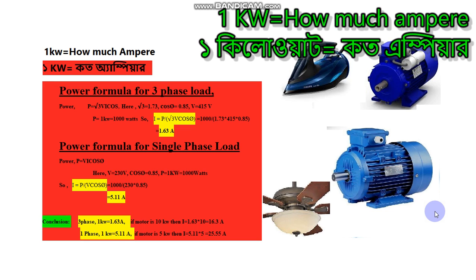The first is the power formula for a three-phase load, and the second is the power formula for a single-phase load. The power formula for a three-phase load is: P = √3 × V × I × cosθ. Here, √3 is equal to 1.73, cosθ (power factor) is equal to 0.85, V is equal to 415 volts, and let's take power P equal to 1 kilowatt, which is 1000 watts.